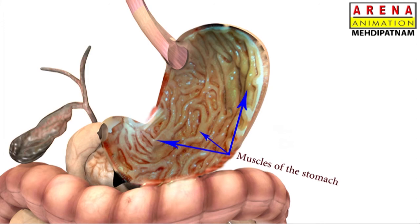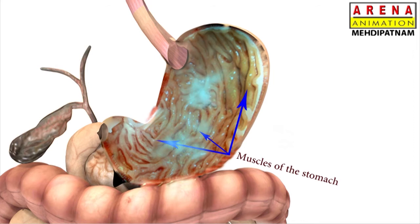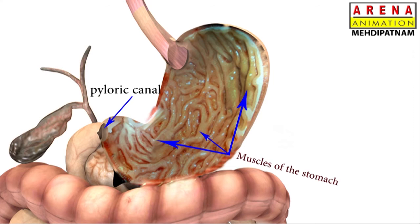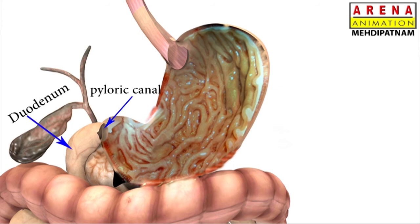The muscles of the stomach wall churn and mix the food with gastric juice. They also help propel the food to the small intestine through the pyloric end. The pyloric valve remains contracted just enough to hold food in the stomach while contractions mix and break it down. When the pyloric valve relaxes, food enters into the duodenum, which is the first part of the small intestine.